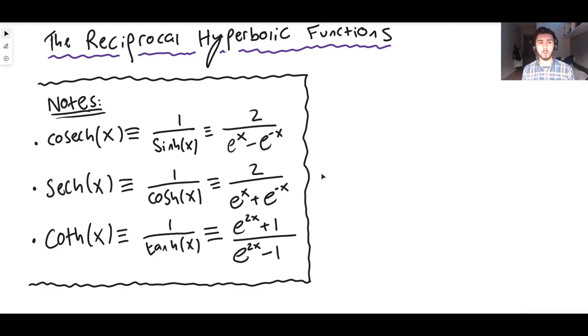So for example cosech is the reciprocal of shine, sech is the reciprocal of cosh, and finally coth is the reciprocal of than, because cot is the reciprocal of tan.